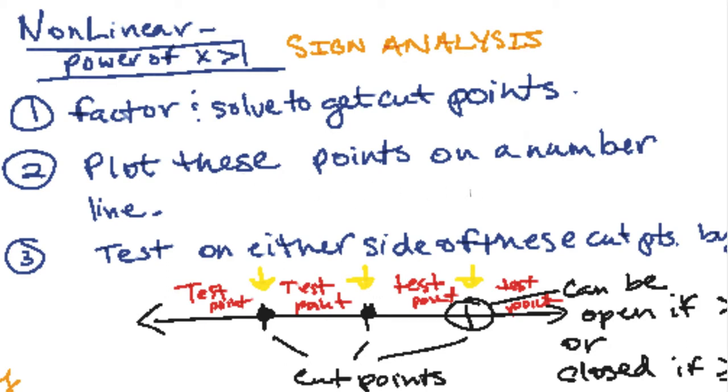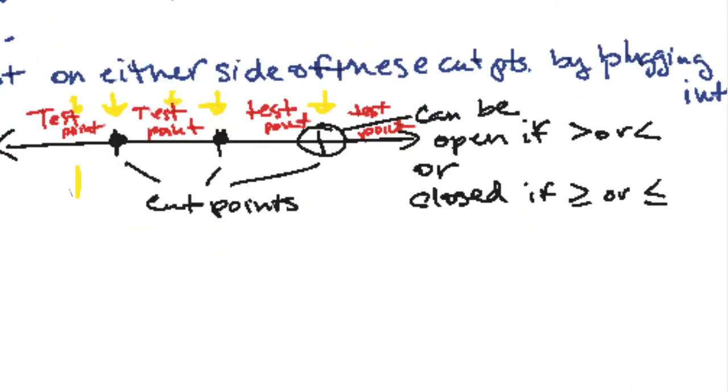So you're going to plot these points on the number line and you're going to test on either side of a point by plugging these test points here into your function. And if your question's asking for where is it less than 0, you would take all of your regions that had a minus sign. If it was greater than 0, it would be a plus sign. If it was a greater than or less than sign, use parentheses. And if it's equal included, we have to use a bracket. Bracket means up to and including, parentheses means not including.